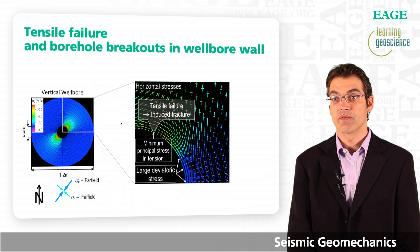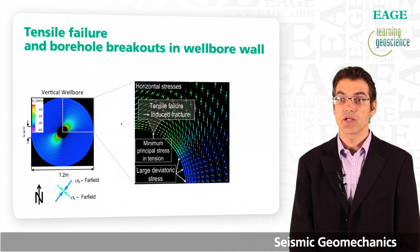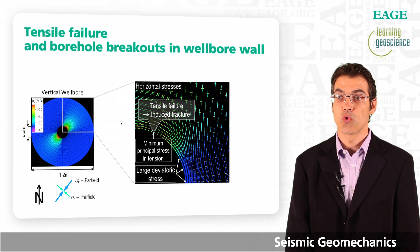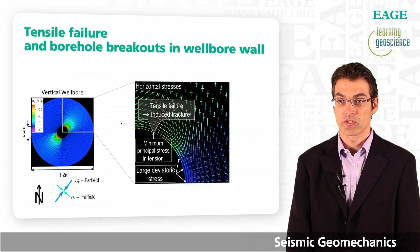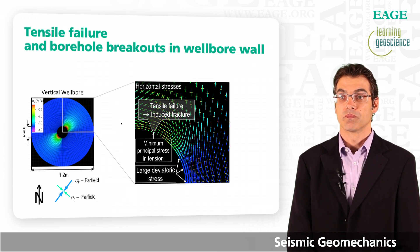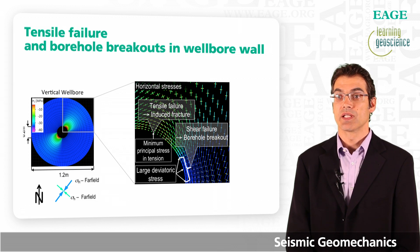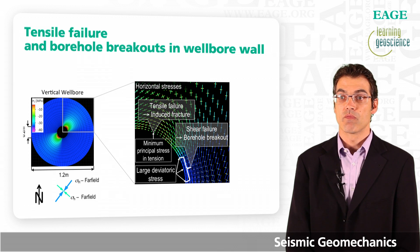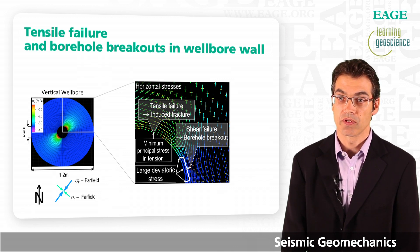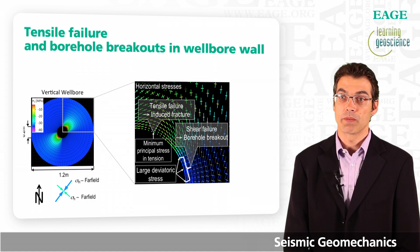At 90 degrees to the tensile failure direction, there is a large difference between the two horizontal stresses — a large deviatoric stress. This can result in shear failure, and when shear failure in the wellbore wall occurs, we may get wellbore breakouts.